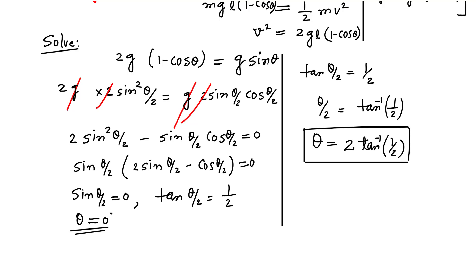Here is a question for you: in this problem the accelerations at point A and B were equal. What will happen if the acceleration at the bottom point is half the acceleration at the extreme point? What will be the angular amplitude theta in that case? Please leave your answer in the comments. I hope you enjoyed this video — please share with your friends. Thank you!